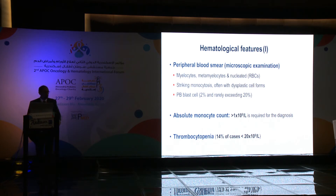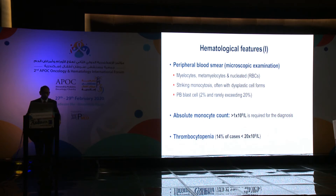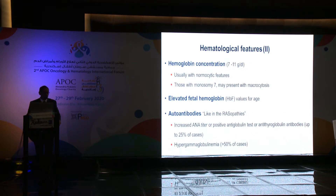Hematologically, patients are diagnosed by peripheral blood smear, which is the main cornerstone for diagnosis, showing striking monocytosis often with dysplastic cell forms, immature myelocytes, metamyelocytes, and nucleated RBCs. Peripheral blood blasts range from 2% and rarely exceed 20%. Thrombocytopenia exists in almost 14% of cases. Hemoglobin is usually normal with normocytic features; with monosomy 7, macrocytosis may be present. Elevated fetal hemoglobin and auto-antibodies exist, including increased anti-nuclear antibody titers and hypergammaglobulinemia in 50% of cases.